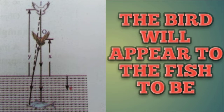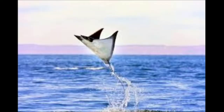Let's solve a problem. A bird is flying down vertically towards the surface of water in a pond with constant speed. There is a fish inside the water. If that fish is exactly vertically below the bird, then how will the bird appear to the fish?